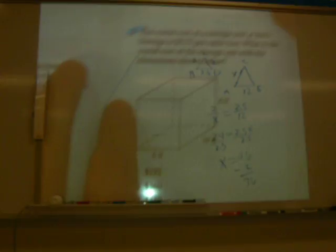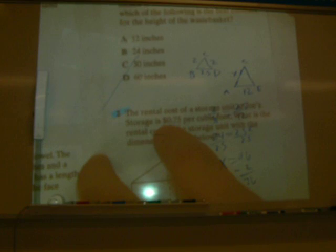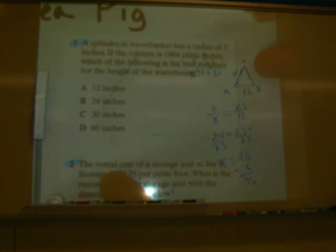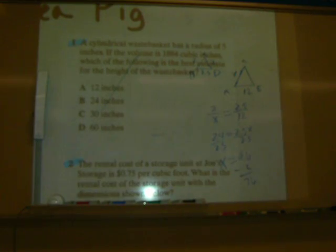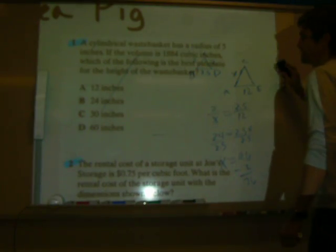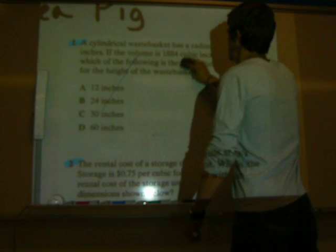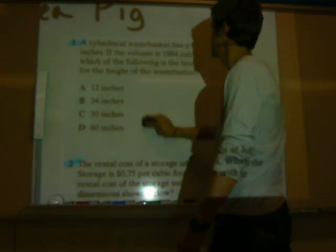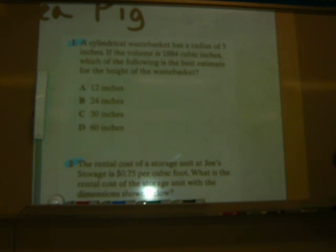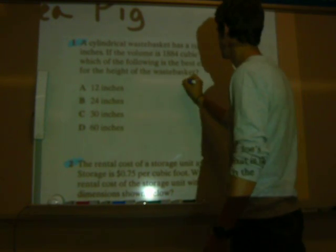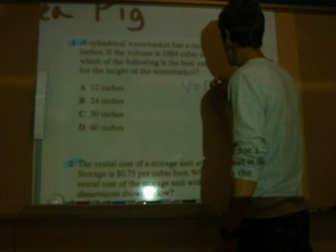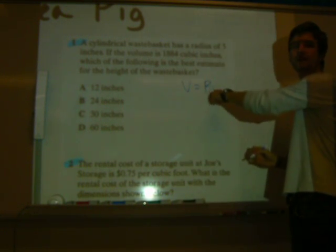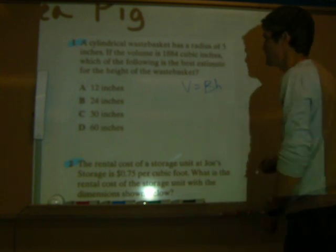Number 1. It's labeled number 1, but it's not really number 1, right? So, this one. A cylindrical wastebasket has a radius of 5 inches. If the volume is 1,884 cubic inches, what is the best estimate of the height of the wastebasket? Well, remember, how do we do volume of a cylinder?